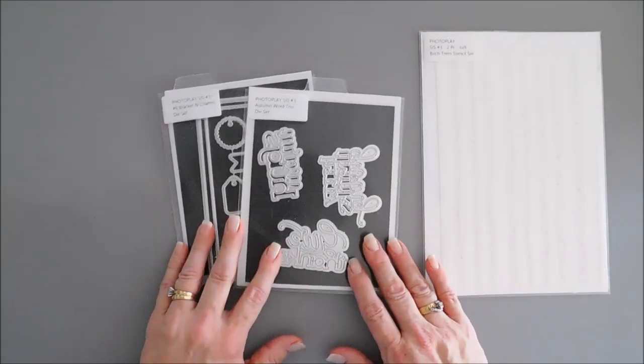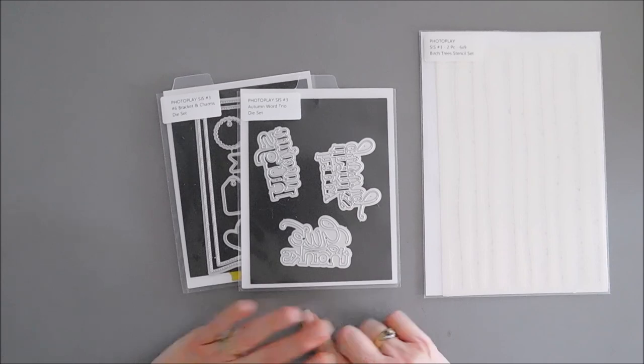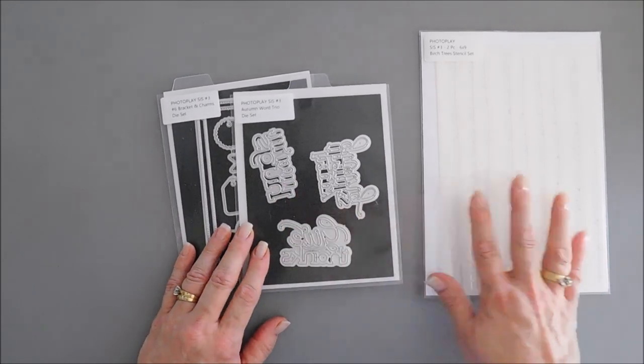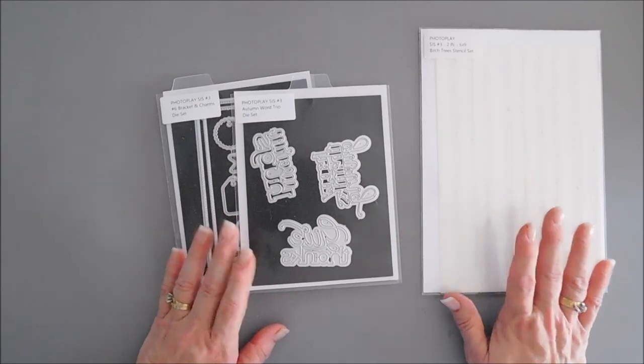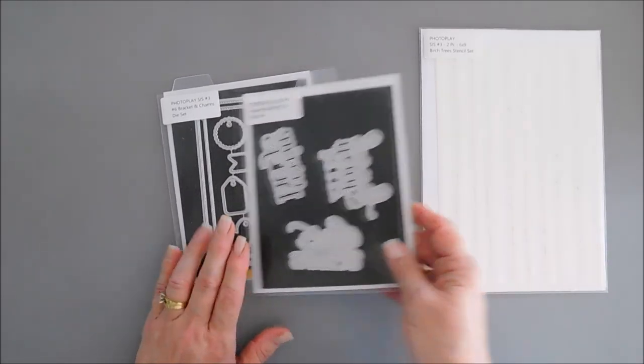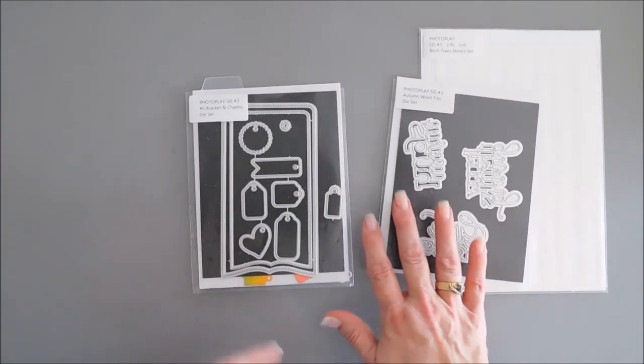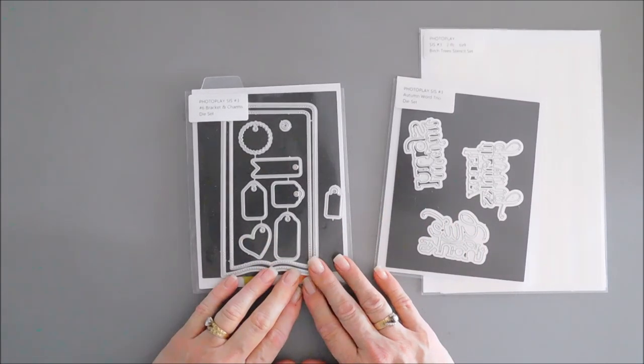For my sentiment, I'm gonna bring back the Autumn Word Trio die set. I love this—there's a sentiment in here that says warm hugs and I just associate that with birch trees, so we're gonna use that for our sentiment. We're also going to switch it up and do a mini slimline card.